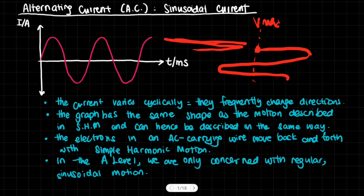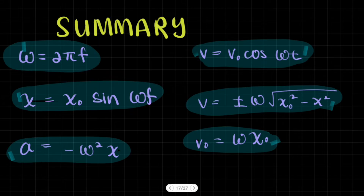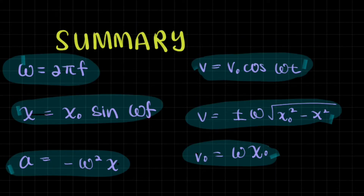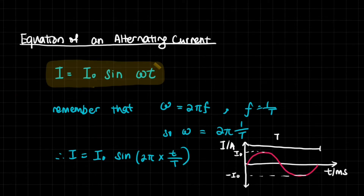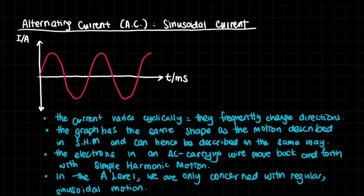Looking at the simple harmonic motion equations — where ω = 2πf and so on — that's why we get the equation of an alternating current: the current at any point in time is I = I₀ sin(ωt). This is just like the displacement equation in SHM, because it's in sinusoidal form. I₀ represents the maximum current.